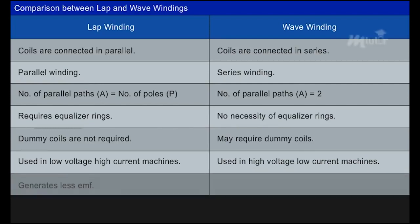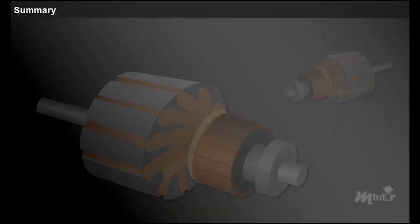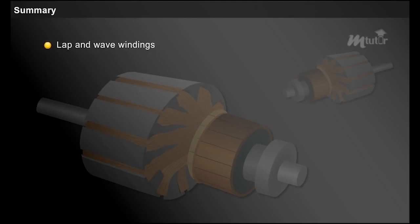Lap winding generates less EMF compared to wave winding. Due to more parallel paths, lap windings can be used for large-current applications, whereas wave winding is not suitable for such applications as it has only two parallel paths. This brings us to the end of the lesson, in which we have learned about lap and wave windings, equalizer rings, and dummy coils.